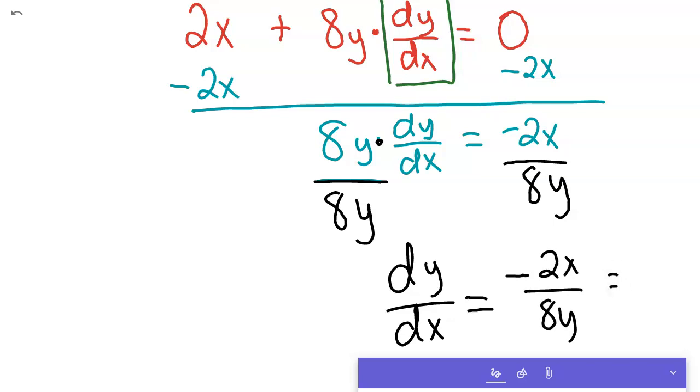or our derivative of y with respect to x, is just negative 2x over 8y, which in turn would be, if you take a 2 out, would be negative x over 4y. So, this is our derivative with respect to x, negative x over 4y.